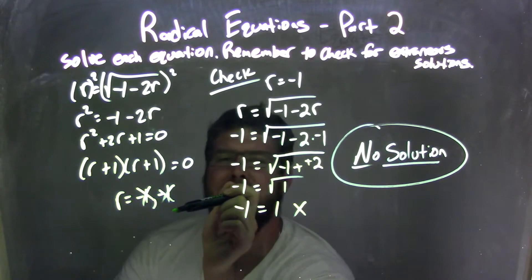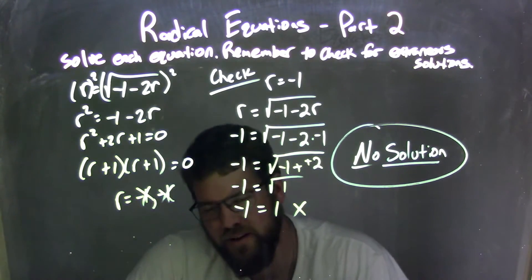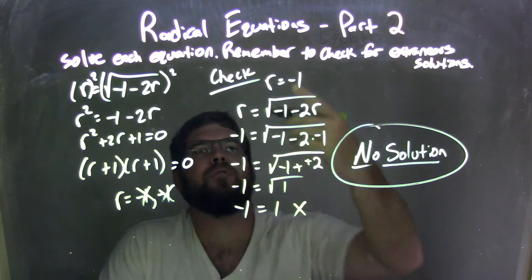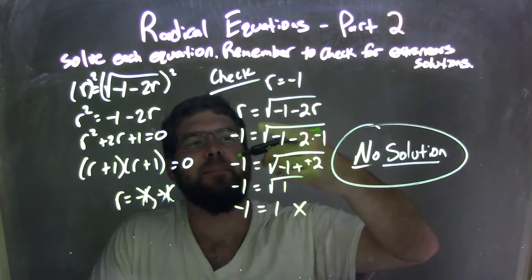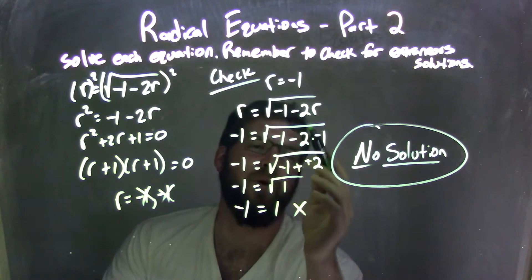Set both of them equal to 0, solved, and I got r equals negative 1 and negative 1. Don't need to write it twice. It's the same number, negative 1. So I checked it just once here. Plugged it back in. When I plugged it back in, be careful of this negative here.